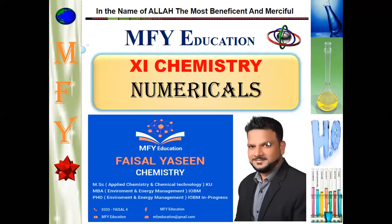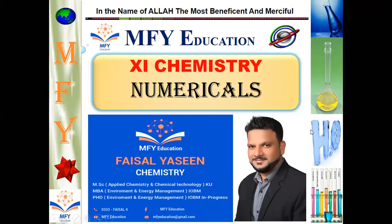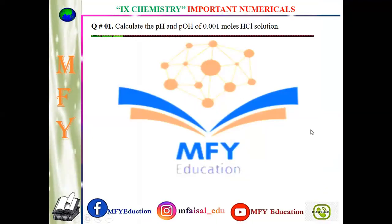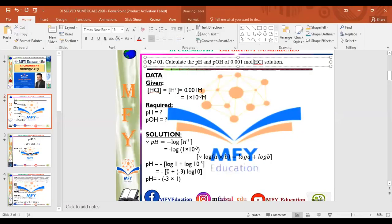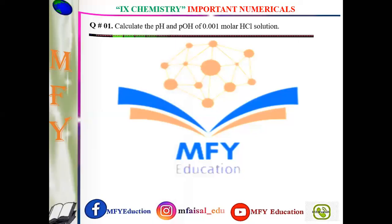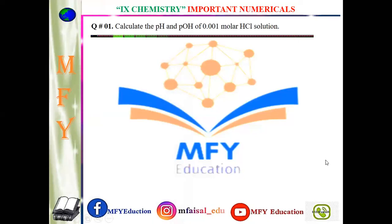Now we are going to start Numericals of First-Year Chemistry related to Acid-Base Chemistry. We start with numerical of 0.001 moles HCl solution — this is given as molar concentration.